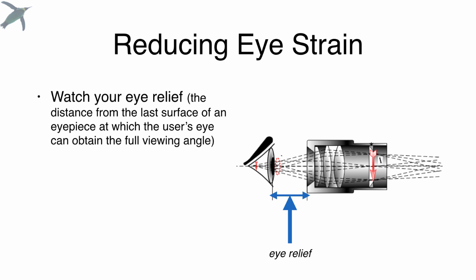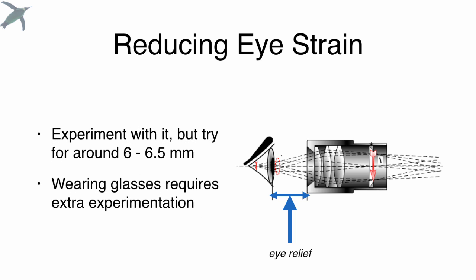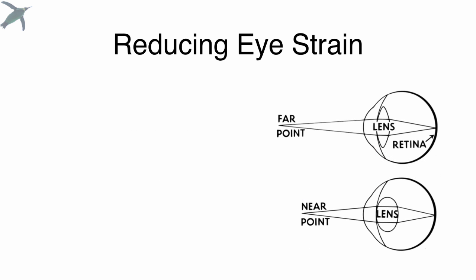The other thing you want to watch is what's called eye relief. And this is something you have to experiment with. That is the distance between your eyeball and that ocular lens. So the higher the magnification that you're using, the shorter the eye relief should be. So as you decrease magnification, try and pull your eyes away from the ocular lens. You've got to experiment. You should shoot for somewhere around 6, 6.5 millimeters distance. If you wear glasses, you're going to need to experiment a little bit more. But this is something that really makes a big difference if you're spending a lot of time in front of a microscope.